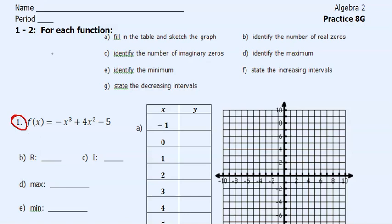On numbers 1 through 2, for each function, fill in the table and sketch the graph, identify the number of real zeros, identify the number of imaginary zeros, identify the maximum, identify the minimum, state increasing intervals, state decreasing intervals.